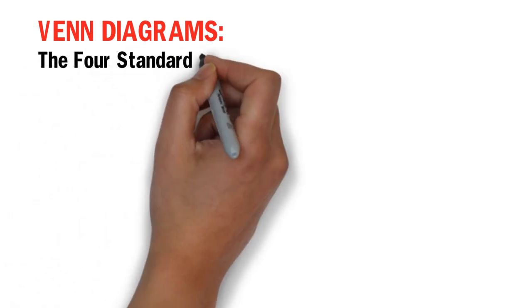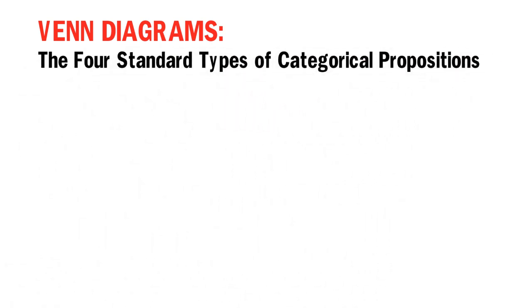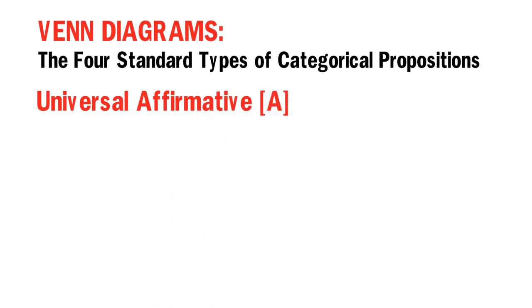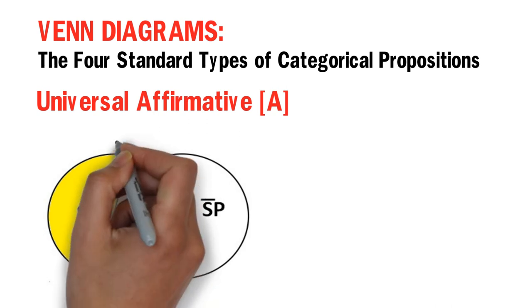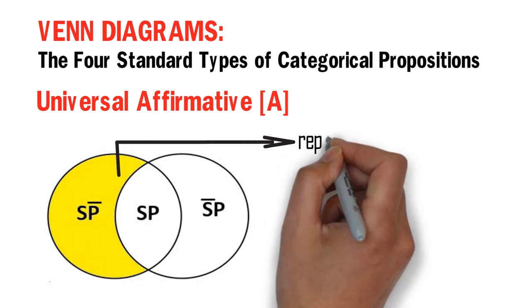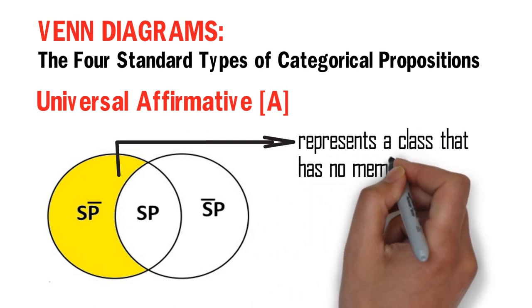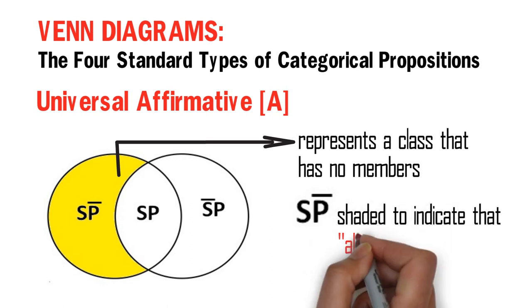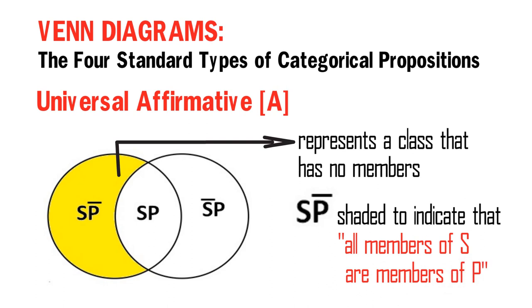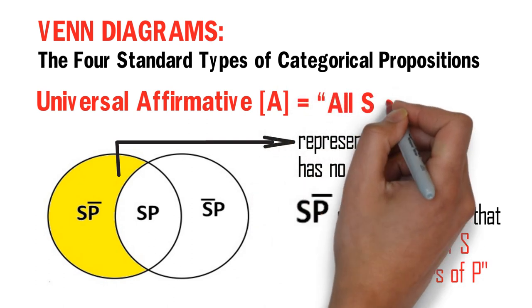Now let's discuss the Venn Diagrams used to represent the four standard types of categorical propositions. Here is the Venn Diagram for Universal Affirmative A Propositions. The shaded area represents a class that has no members. Thus, in the Venn Diagram for a Universal Affirmative A Proposition, the area 'S but not P' is shaded to indicate that all members of S are members of P. Thus, we say: all S are P.